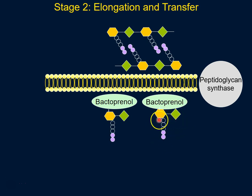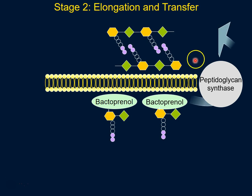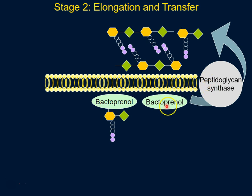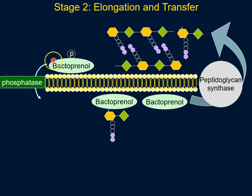Peptidoglycan synthase takes this complex — the two sugars with the pentapeptide — and flips it out, attaching it onto the growing cell wall. The job of bactoprenol is then done, and it can be recycled back to its original state.